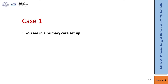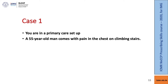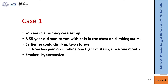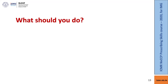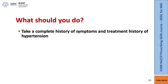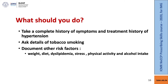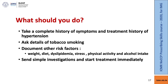Let's look at case one. You are in a primary care setup. A 55-year-old man comes with pain in the chest on climbing stairs. Earlier he could climb up to two stories, but since one month now he has pain on climbing just one flight of stairs. He's a smoker and a hypertensive. What should you do? First, make sure you take a complete history of symptoms and the history of hypertension. Ask the details of tobacco smoking. Document other risk factors such as weight, diet, dyslipidemia, stress, physical activity, and alcohol intake. Send some simple investigations and start treatments immediately.